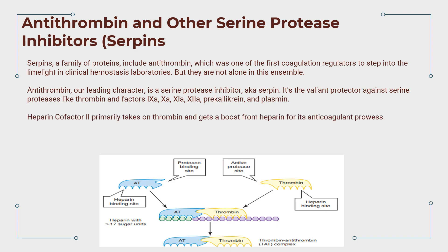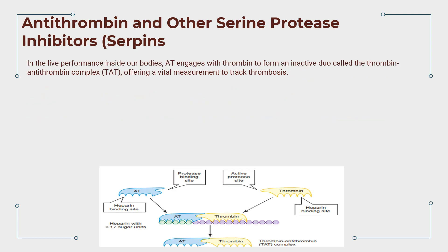Joining the cast is heparin cofactor 2, which primarily takes on thrombin and gets a boost from heparin for its anticoagulant prowess. The story of heparin's therapeutic use unfolds as different forms target specific factors. Antithrombin engages thrombin in battle, forming an inactive complex called the thrombin-antithrombin complex, TAT, which offers a vital measurement to track thrombosis.